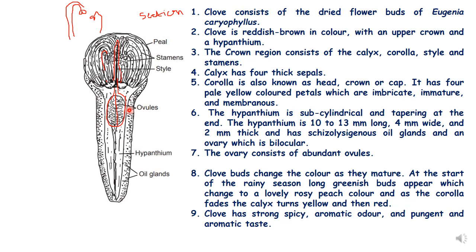Clove buds change color as they mature. Initially they are green in color, but they change to red or brown when mature. At the start of the rainy season, long greenish buds appear, which change to a rosy peach color. As the color fades, the calyx turns yellow and then red. Clove has a strong, spicy aromatic odor and pungent aromatic taste.